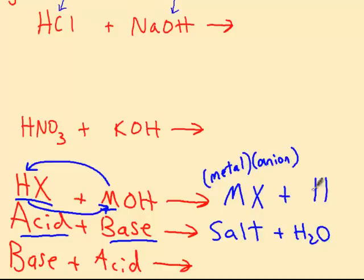And then plus HOH. Now HOH is hydrogen hydroxide, but we normally rewrite it and write it as H2O. So salt, which is the metal from the hydroxide base, and X, the anion from the acid, form a compound. We do have to pay attention to charges, and then water. So let's do an example, I think it's easier to see that way.